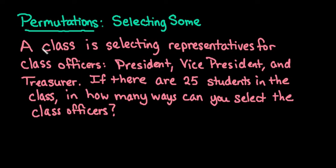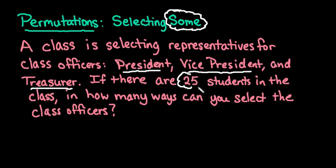Hi, for this video what I want to do is show you how to find permutations when only some of the entire population or the entire group is selected. So what we have here is a class is selecting representatives for class officers: President, Vice President, and Treasurer. If there are 25 students in the class, in how many ways can you select the class officers?